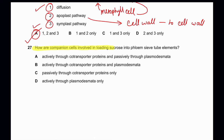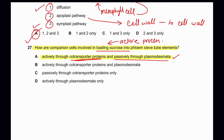Question 27: How are companion cells involved in loading sucrose into phloem sieve tube elements? Loading sucrose into companion cells is an active process requiring energy from respiration. Option A — actively through co-transporter protein and passively through plasmodesmata — is correct: sucrose is actively loaded into companion cells via co-transporter proteins, and then moves passively from companion cells to phloem sieve tube elements through plasmodesmata. Option B is wrong because movement through plasmodesmata is not active. Option C is wrong because it involves energy, so cannot be passive. Option D is wrong because plasmodesmata movement does not require energy. So 27A is the correct answer.